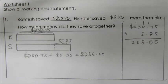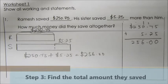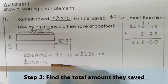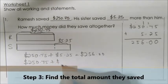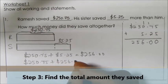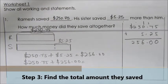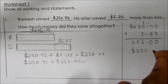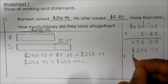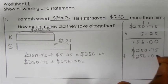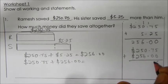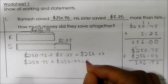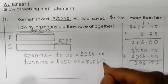So the amount of money Ramesh saved is $250.75 and the amount of money his sister saved is $256.75. Let's do the working to find out the answer: $250.75 plus $256.75. This will give us the final answer, which is $506.75.